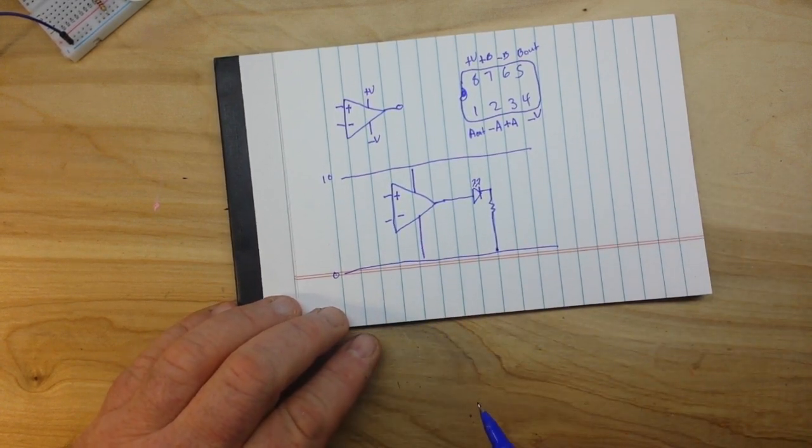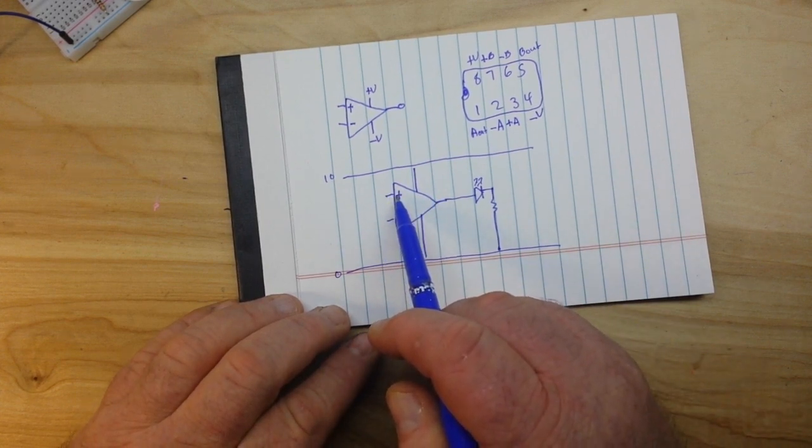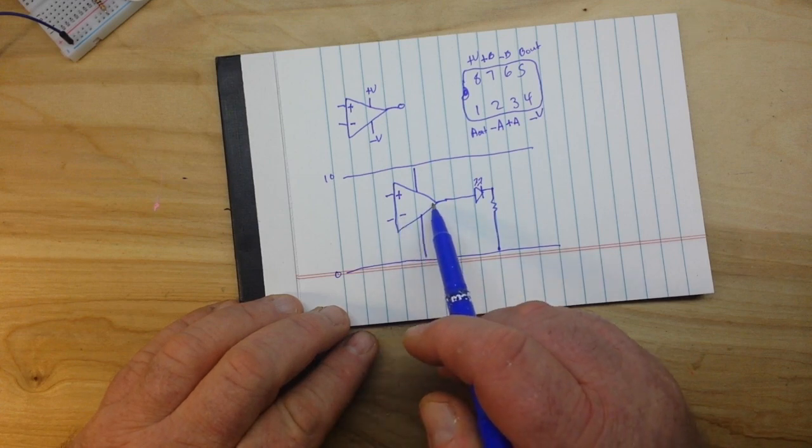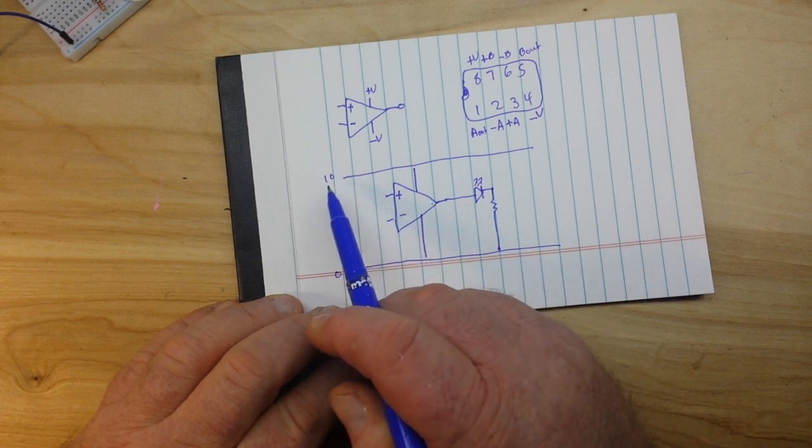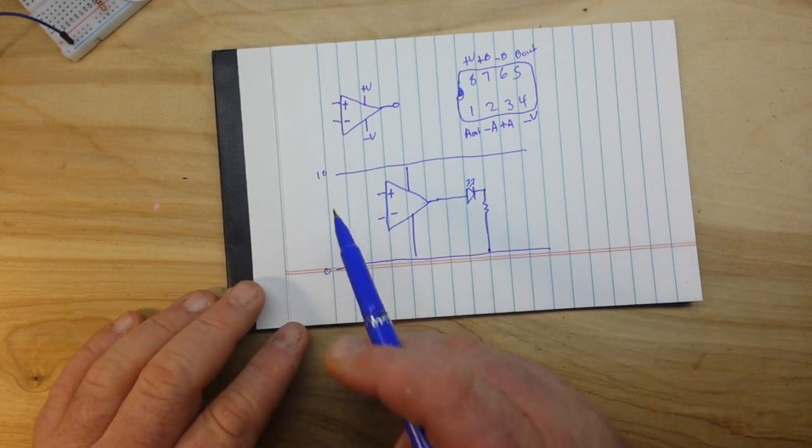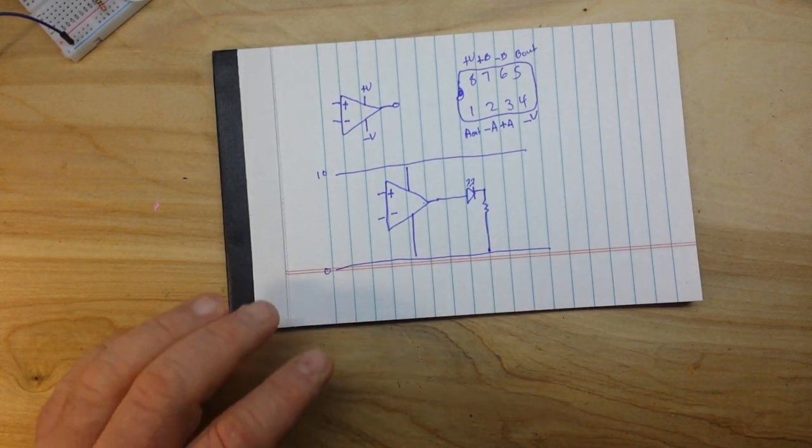So the way the comparator works is if the positive input is of greater voltage than the negative input, the output switches on and it swings to the positive rail. This is not a rail-to-rail op-amp, so we're not going to get the full 10 volts, but we'll get very close to it.